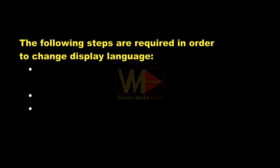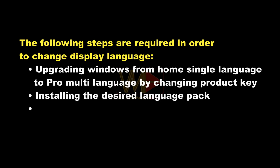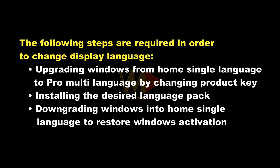So you will need to do the following steps in order to change your display language to any language: upgrading Windows from Home Single Language to Pro multi-language by changing the product key, installing the desired language pack, and downgrading Windows back to Home Single Language to restore Windows activation.